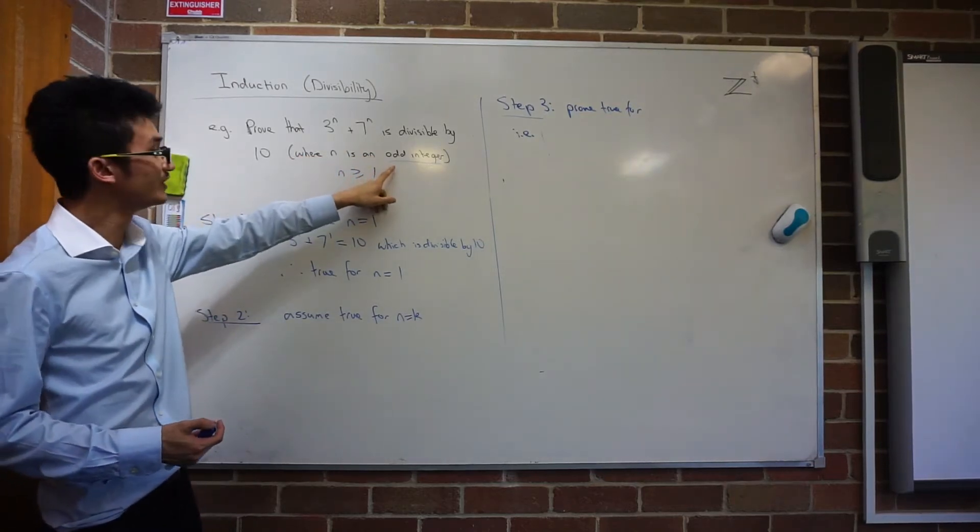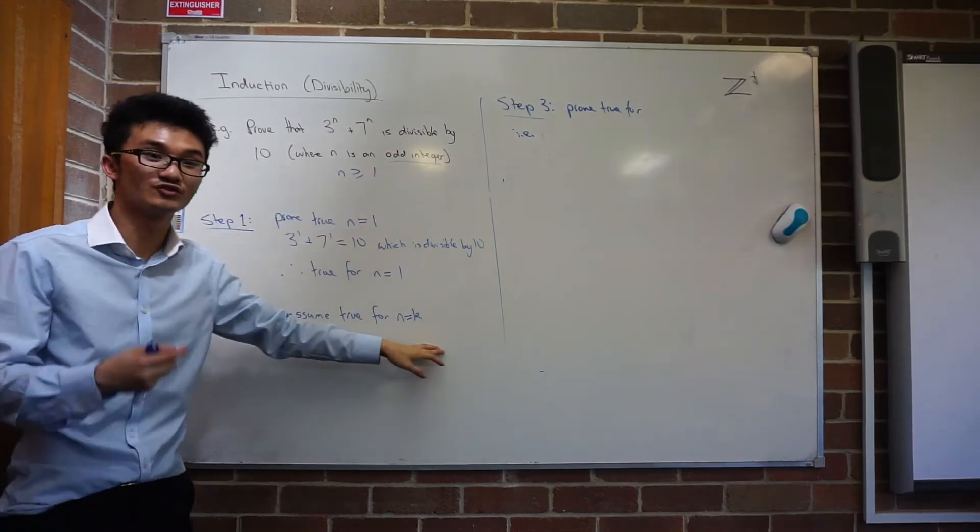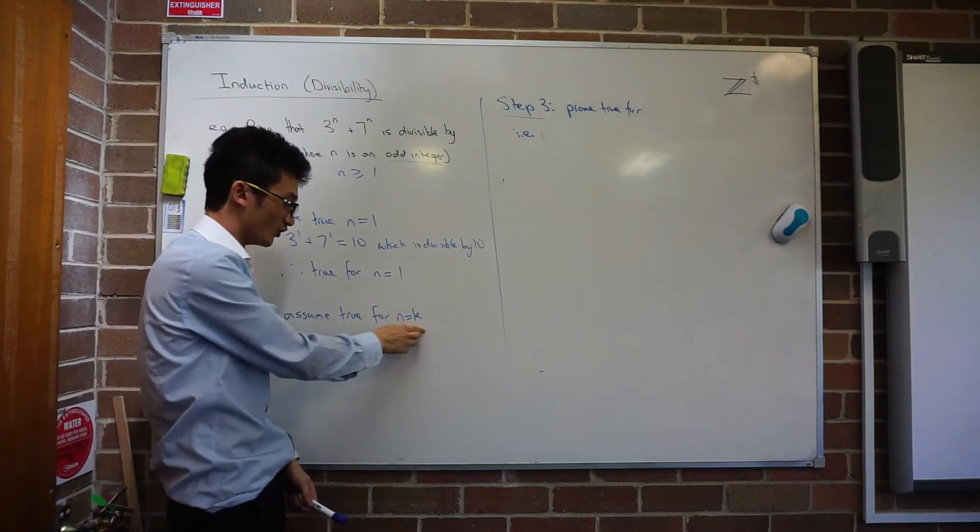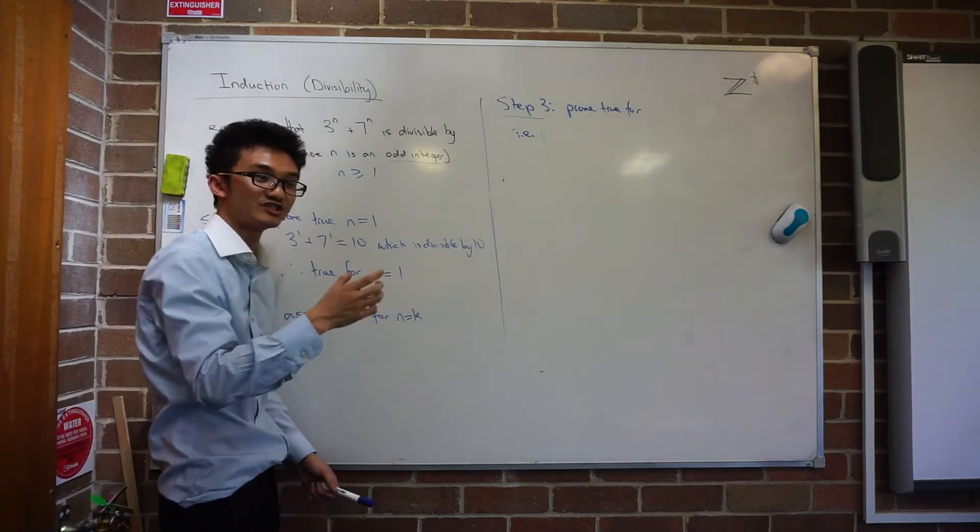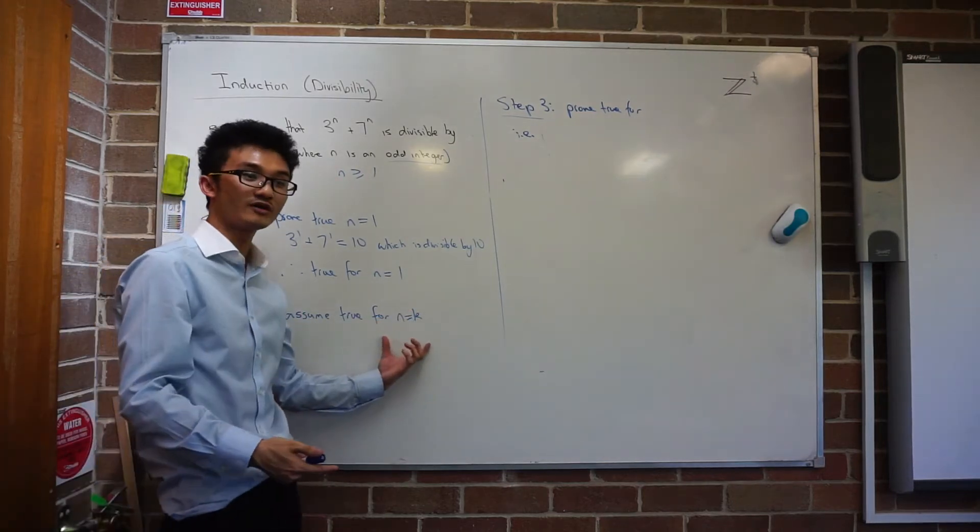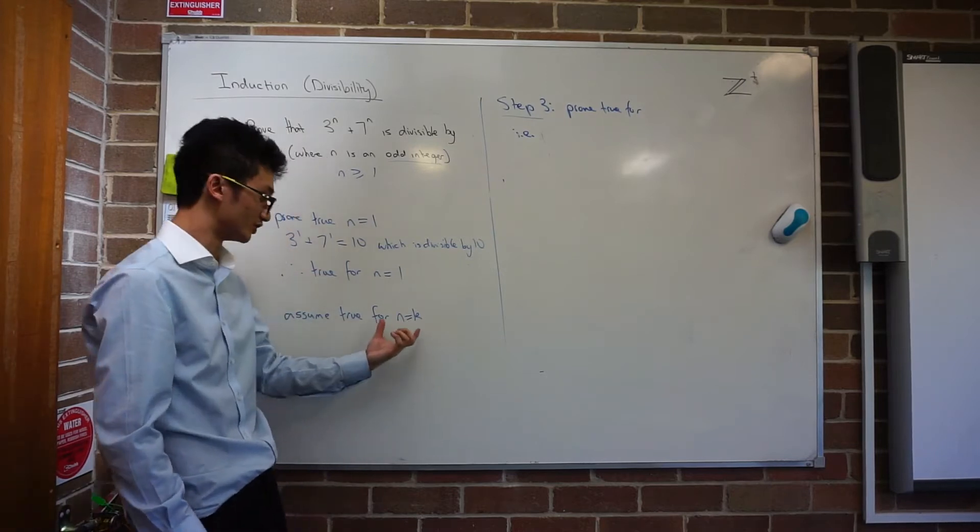It's going to be like k plus 1? No, it's going to be odd, right? It's going to be odd. So when you're assuming true for n equals k, you don't have to make sure that this value is odd. You can just say when you're assuming true for n equals k, you know that's going to work. So in this case, k has to be an odd integer. Okay, so you can assume that. That's what you're really writing when you're saying assume true.